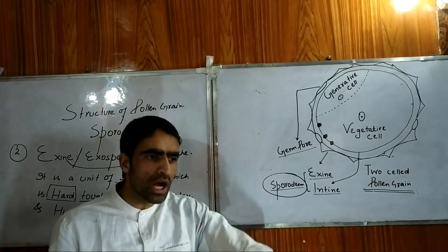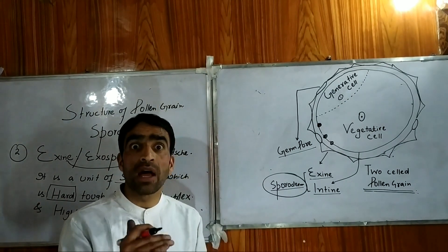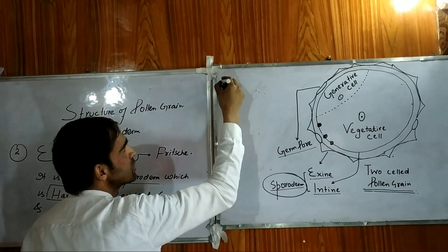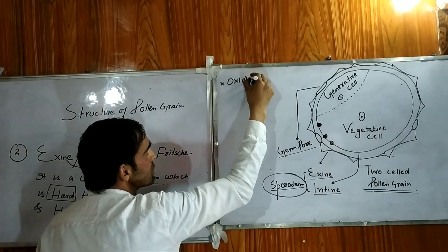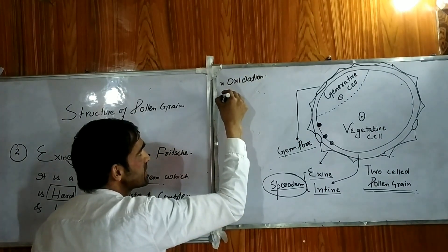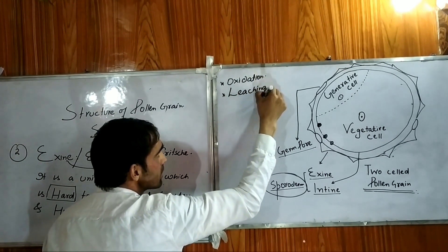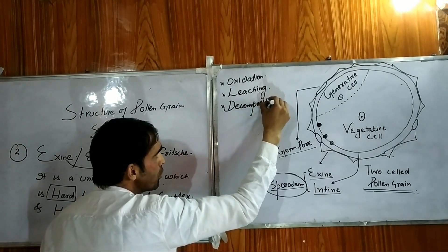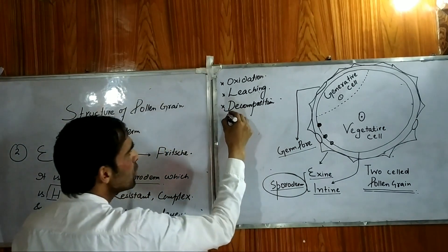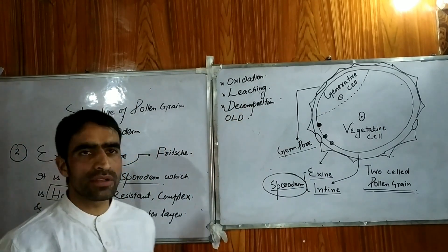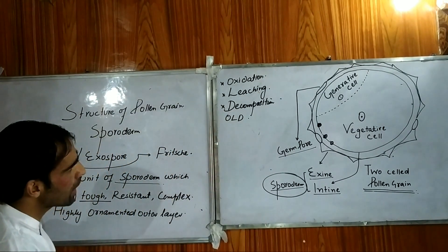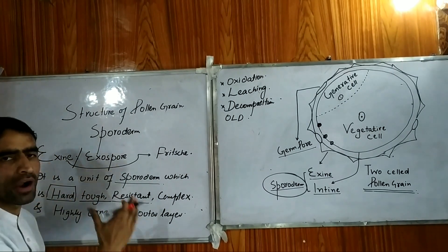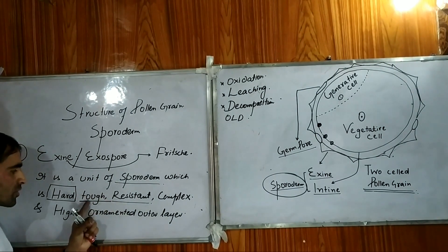There are four materials in the sporoderm that give it resistance. Because of this material, there is no oxidation, no leaching, and even if the pollen grain is buried in the earth, there is no decomposition. Neither oxidation nor leaching nor decomposition occurs. So that means this exine makes the pollen grain extremely durable and hard.